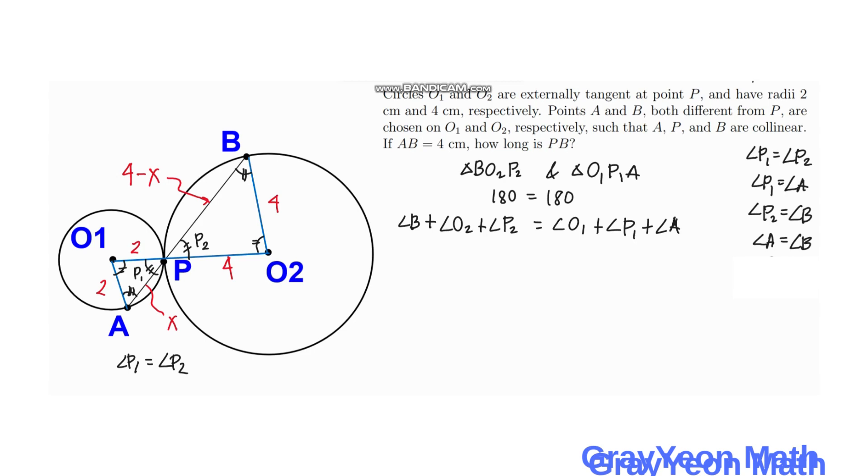And since we proved that angle B is equal to angle A, we can replace this angle B on the left-hand side with angle A, and angle O2 remains, plus angle P2 can be replaced with angle P1 since we proved that earlier, equal to angle O1 plus angle P1 plus angle A. So we can cancel out the same terms on both sides, so this cancels out and this cancels out, so meaning angle O2 equals angle O1.